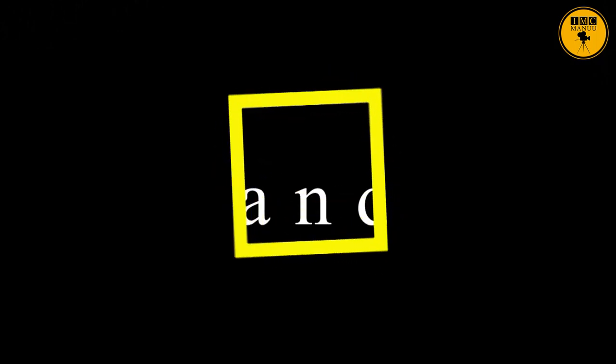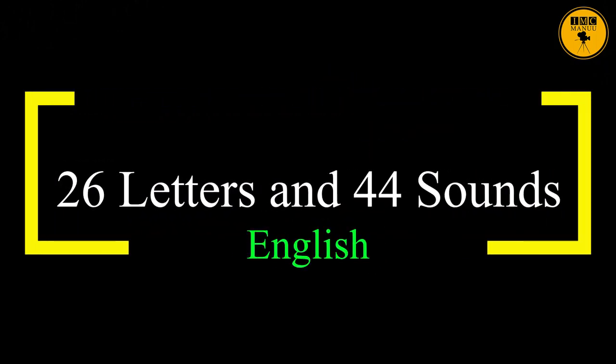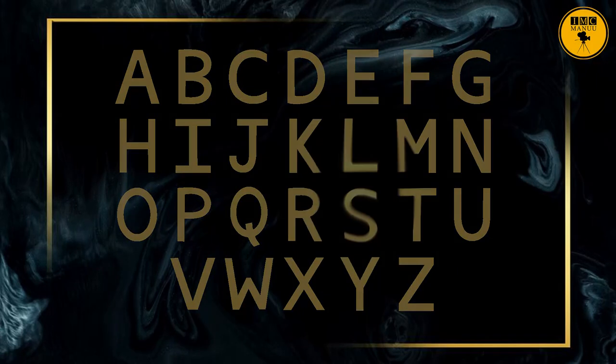In English there are 44 sounds but only 26 letters of the alphabet. This is not the case in Urdu and other Indian languages — in most Indian languages, including Urdu, we have one letter to represent one sound. In English, there are fewer letters than sounds. There are only 26 letters of the alphabet, but there are 44 sounds. In order to speak good English, it is important that you learn these 44 sounds.